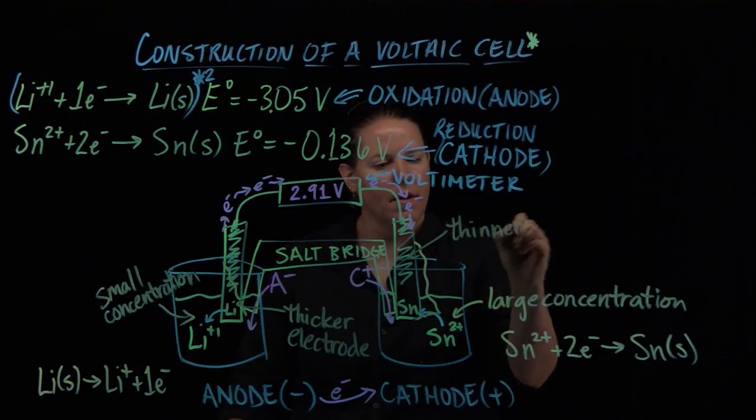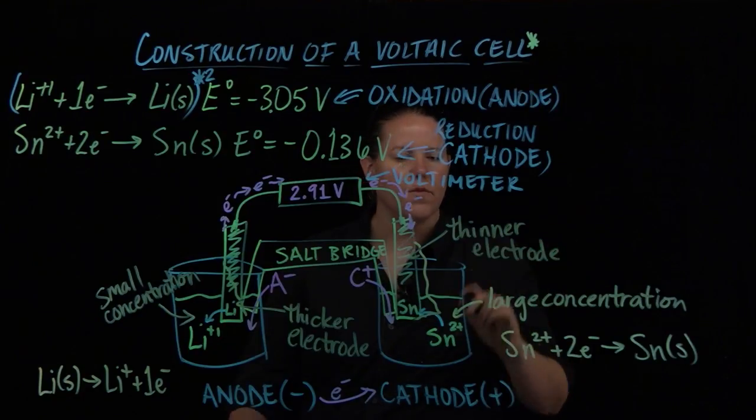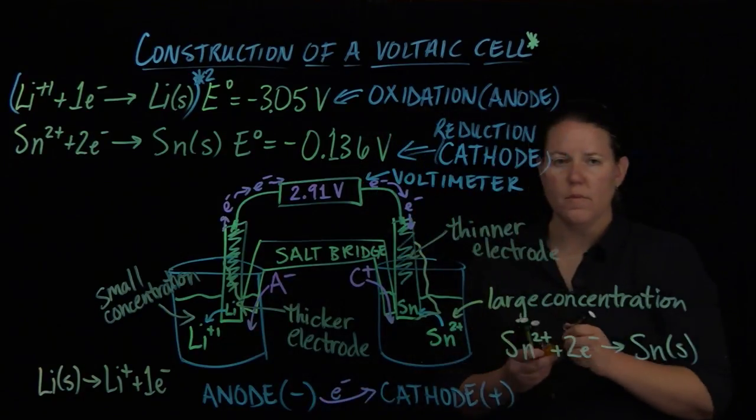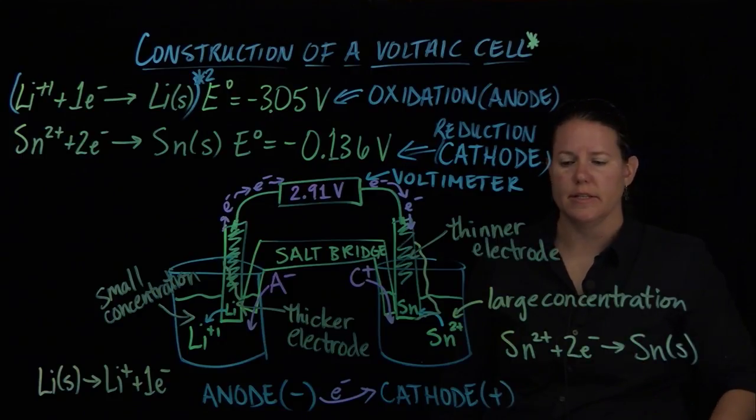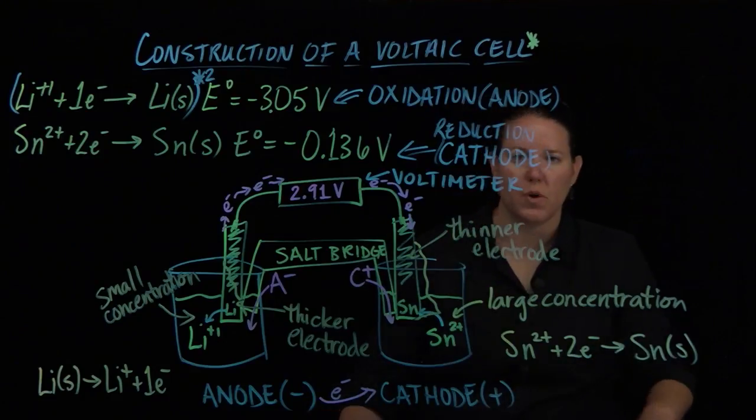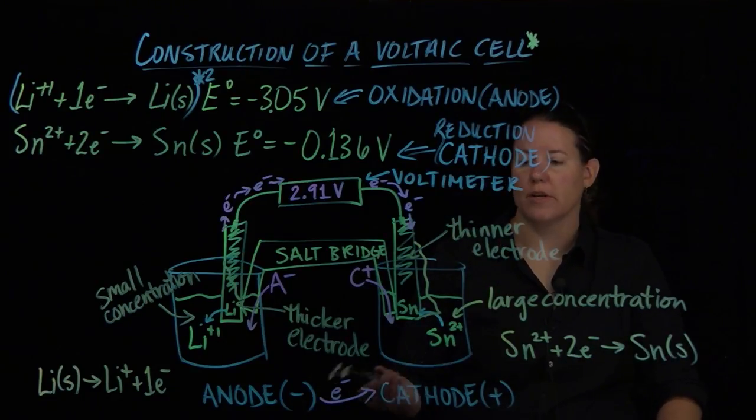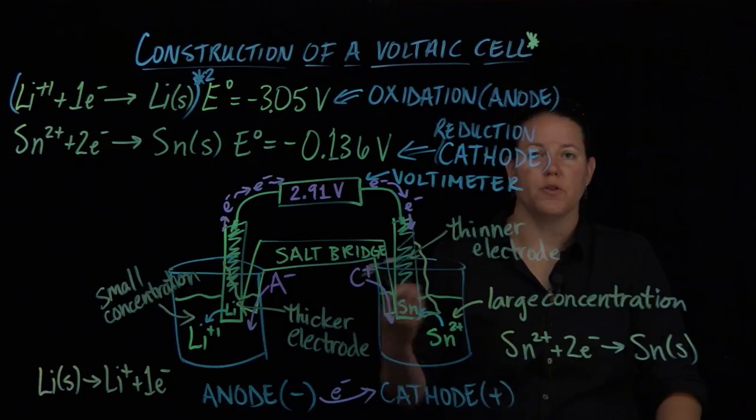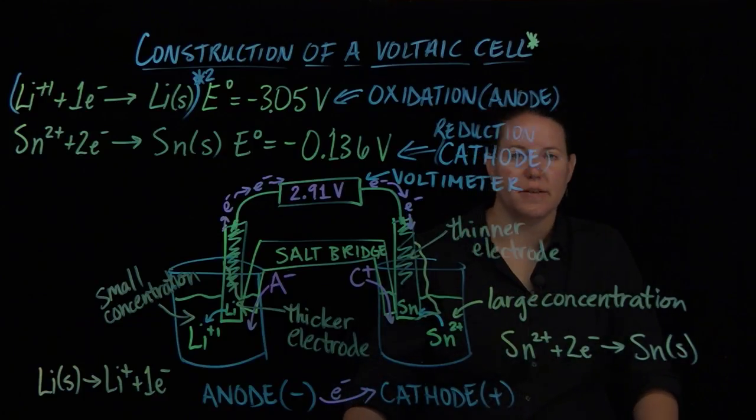And that's how you would get this to run for quite a while. And that's what the point of doing Nernst equations is as well. Nernst equations combine concentration values so that we can see how the electrodes and the cell potential progress over time. Until next time.